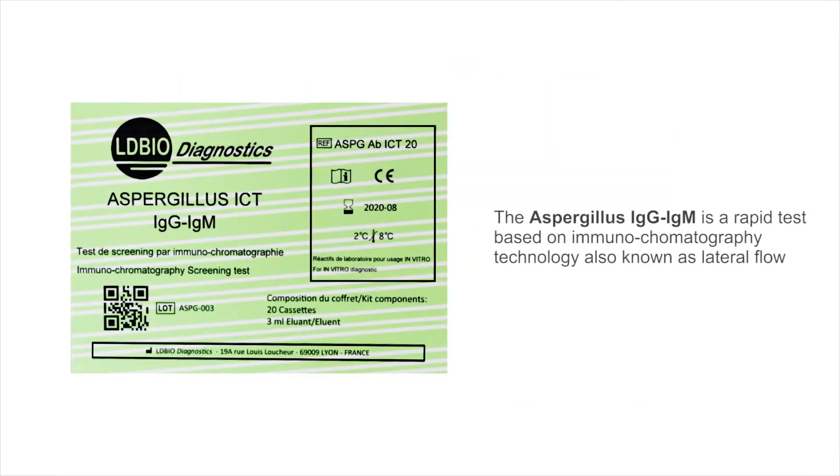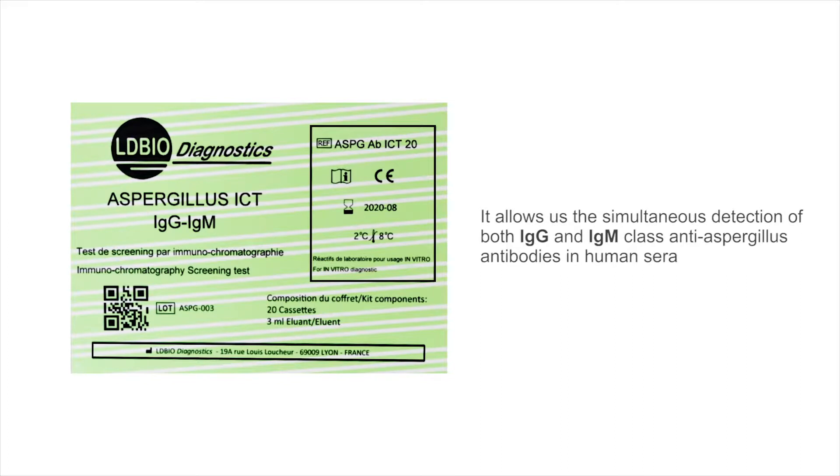The Aspergillus IgG IgM is a rapid test based on immunochromatography technology, also known as lateral flow. It allows the simultaneous detection of both IgG and IgM class anti-Aspergillus antibodies in human sera.